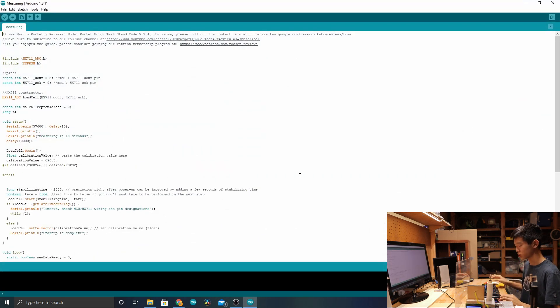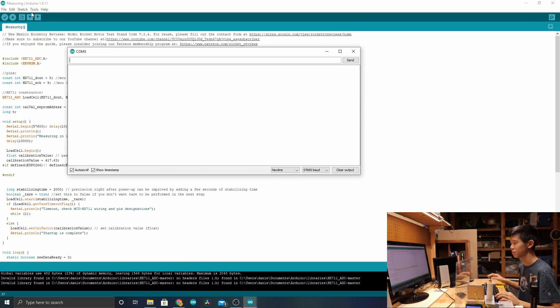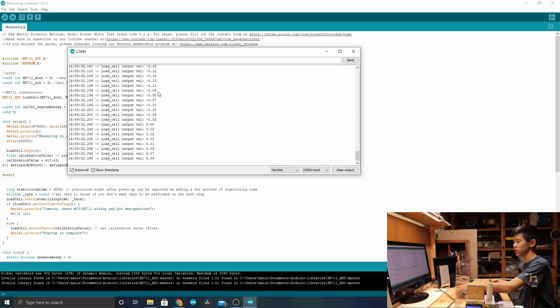Now that that is open, we are going to take off this calibration weight. We're going to go to this line in code: calibration value equals 696.0. We're going to delete the 696.0 and paste the value we copied before. Now we can upload it. Now that it's finished uploading, open the serial monitor by pressing CTRL-SHIFT-M. Make sure that the baud rate is at 57,600. It should say measuring in 10 seconds. After 10 seconds, it will start giving you zero. If we put my 177 gram iPhone on there, it will read 177 grams. If we put this eraser right here, it will read you the weight of the eraser.